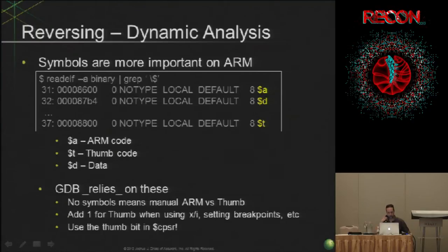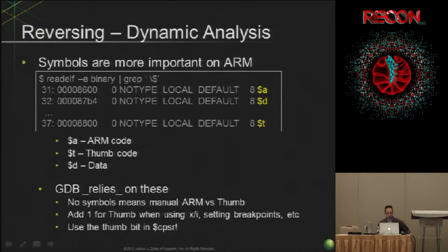Symbols are a lot more important on ARM with Linux. GDB depends on special symbols — the $A, $D, and $T things — which indicate whether things are ARM code, Thumb code, or data respectively. Without these present for a binary, GDB has no idea if it should be in ARM or Thumb mode when it hits a breakpoint. You won't have those on proprietary binaries from OEMs, so you'll have to deal with keeping track of Thumb mode on your own. GDB will still crash on you — you'll set breakpoints, tell it to go, it won't hit the breakpoint, GDB will crash and you'll have to start over.